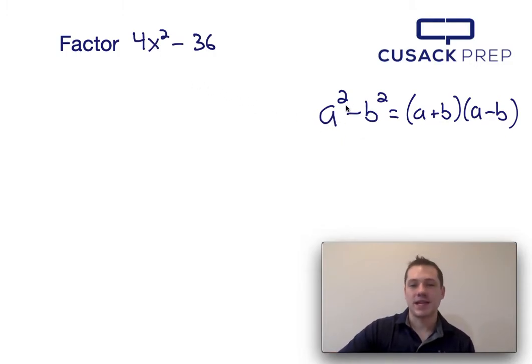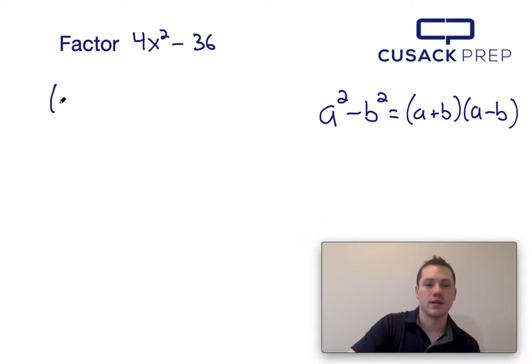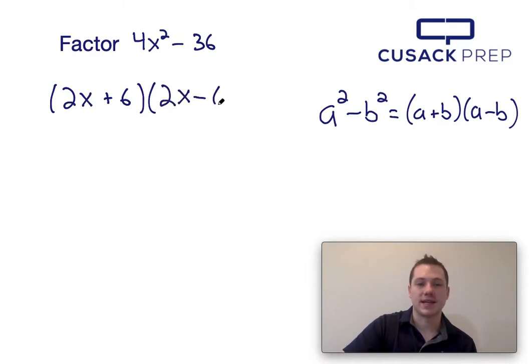So 4x squared is the same as a squared - a would just be the square root of 4x squared which is 2x, and b would just be the square root of 36 which is 6. So this factors into 2x plus 6 times 2x minus 6.